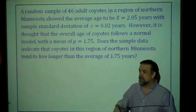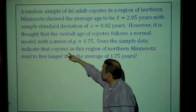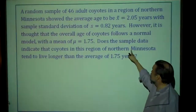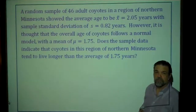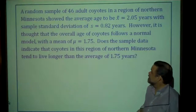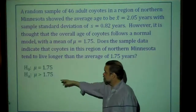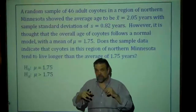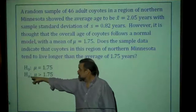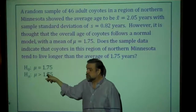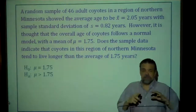Asking 'does the sample data indicate that' is like asking what your alternative hypothesis is. So the alternative hypothesis is that coyotes in this region tend to live longer than 1.75 years. The null hypothesis is that the coyotes tend to live exactly 1.75 years. So our hypotheses are: H₀: μ = 1.75, and Hₐ: μ > 1.75.